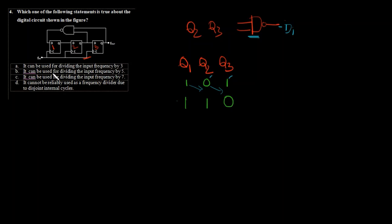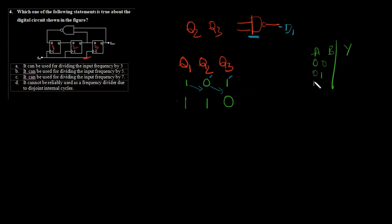This is something like a shift register. At the next state, Q2 and Q3 are the data — 1 and 0. For NAND: 1 and 0 gives 1. If you have confusion, just use the NAND gate truth table: 0,0 → 1; 0,1 → 1; 1,0 → 1; 1,1 → 0.